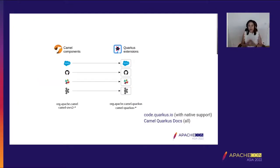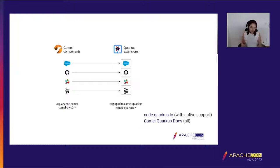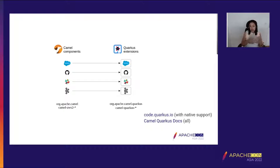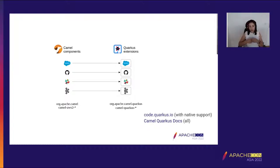To work with Camel Quarkus, all the Camel components become Quarkus extensions. We create a Quarkus application and add dependencies for our Camel extensions. The dependencies are slightly different from standalone Camel — when using Spring Boot Starters or Quarkus extensions, we have different dependency coordinates on Maven Central.